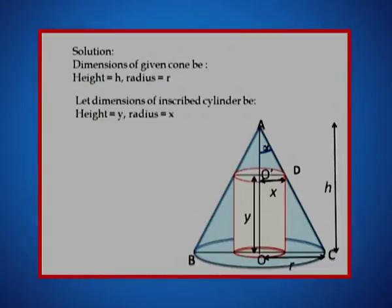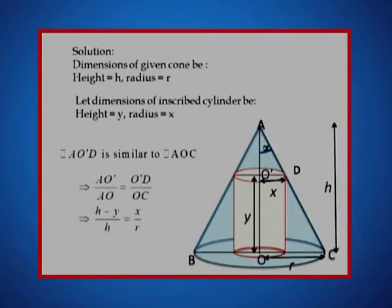The key to this problem is to figure out a relation between y and x such that the volume of cylinder can be written as a function in one variable. In this case, the relation comes through similar triangles. The triangle AO'D is similar to triangle AOC and therefore, the corresponding sides are proportional which means AO' upon AO would be same as O'D upon OC.